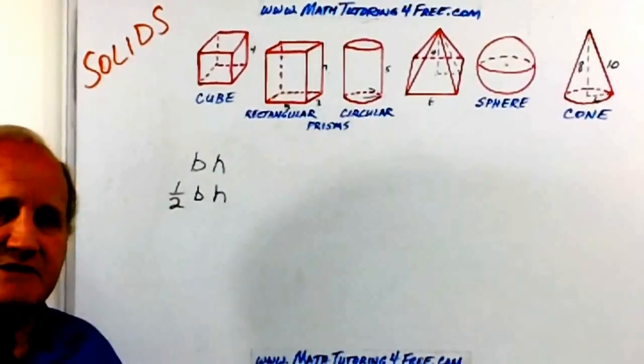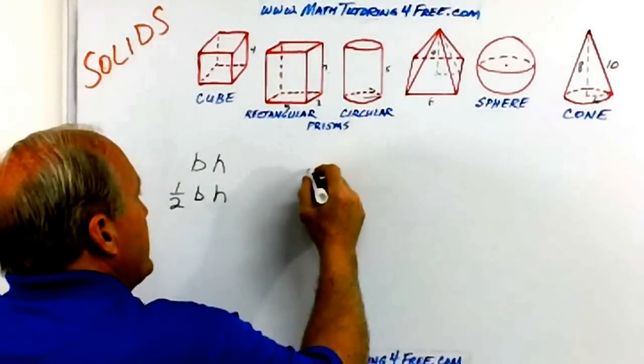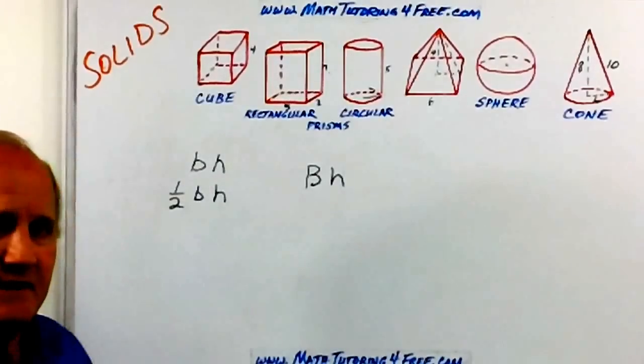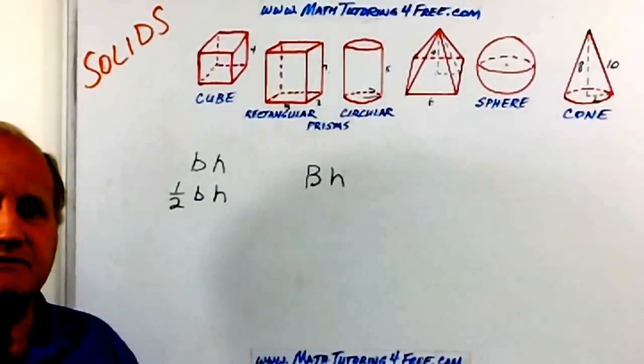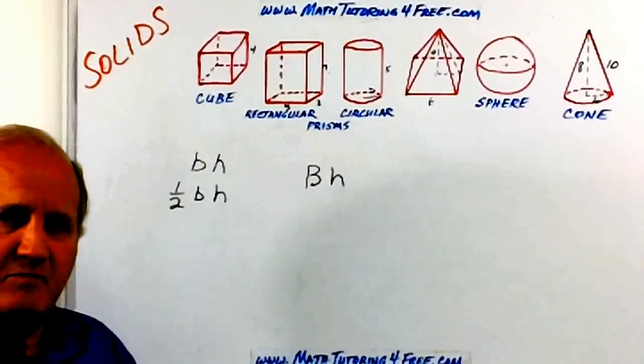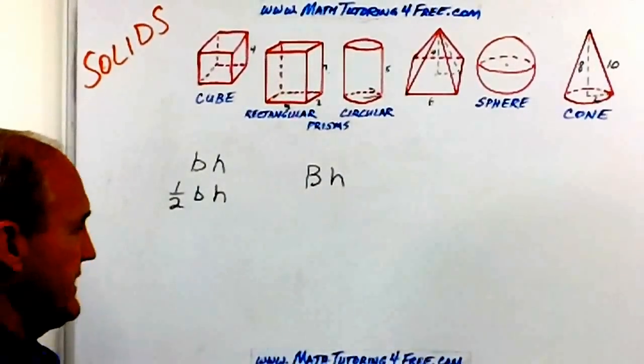Well, volume is very similar to that in most cases, only it's the area of the base times the height. For the area of the base, we use the capital letter B. That indicates the area of the base, then multiplied times the height.